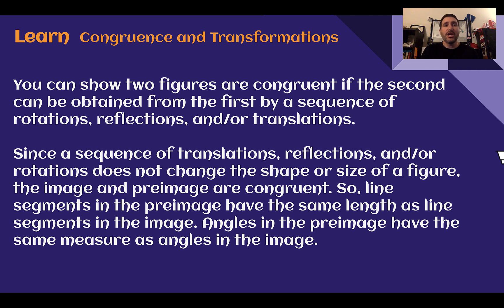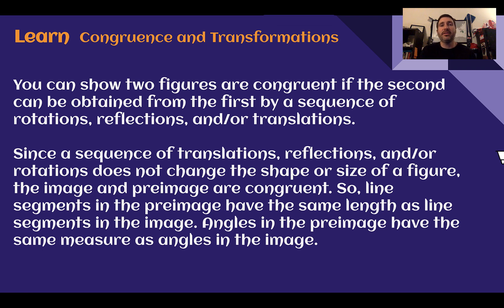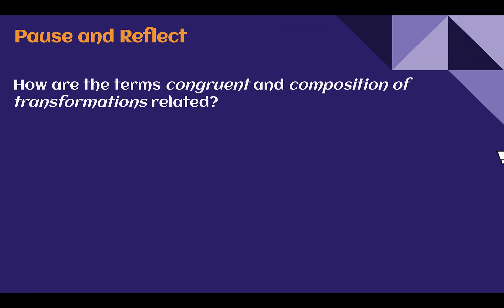Through these sequences of transformations, we can show that two figures are congruent if we can get the second image by doing a sequence of rotations, translations, or reflections from our pre-image. Since a sequence of translations, reflections, and rotations does not change the size and shape of a figure, the image and the pre-image are congruent. This means the line segments and angles in the pre-image are the same as in the image. Take time to pause and reflect: how are the terms congruent and composition of transformations related?